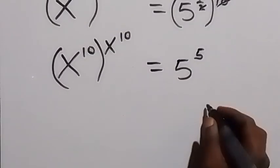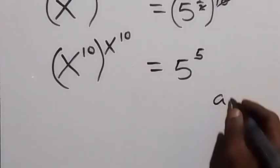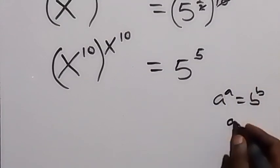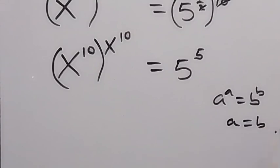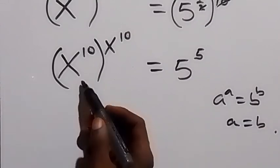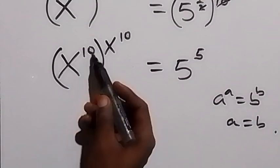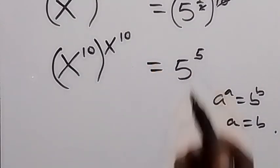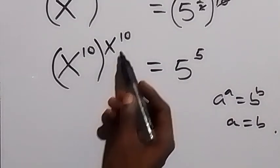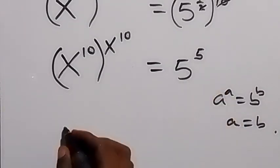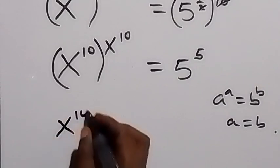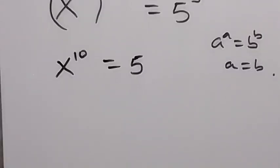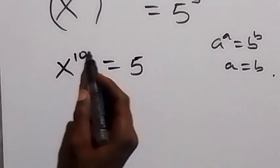From here, we have a pattern: when a raised to power a equals b raised to power b, we conclude that a equals b. From here we can see this follows that pattern — x raised to power 10, x raised to power 10, and 5 raised to power 5. Since we have the same base and same power, we can say x raised to power 10 is equal to 5.